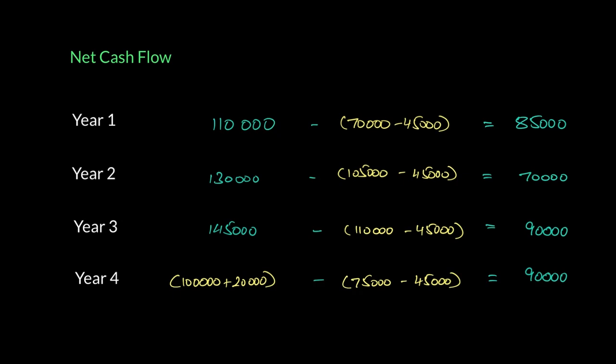Same exercise I've done for year 2, $130,000. And from the expenditure $105,000, I've removed the depreciation $45,000. So as a result, this becomes $60,000 is my cash outflow. That gives me a net cash flow of $70,000. Year 3, $145,000 from $110,000, we'll remove this $45,000. And that gives you $90,000 to be the net cash flow.